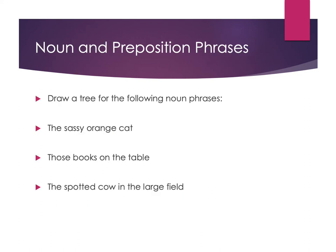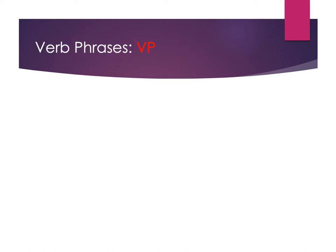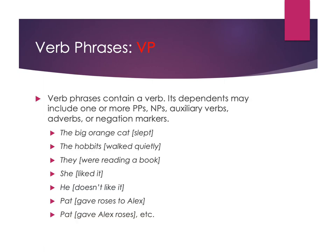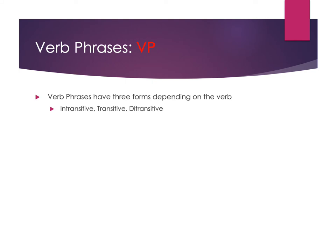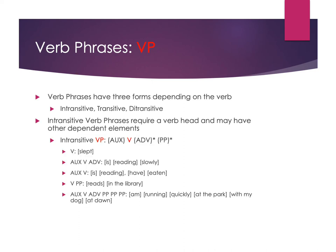Moving on to verb phrases: verb phrases contain a verb, and can also include prepositional phrases, noun phrases, auxiliary verbs, adverbs, and negation markers. We won't focus on negation because it gets a bit more complicated. There are three different forms of verb phrase depending on whether the verb is intransitive, transitive, or ditransitive. The base structure of all of these is the same — it's just that some have additional required pieces based on transitivity. For an intransitive verb phrase, you have to have a verb head, and then you can have other dependent elements.